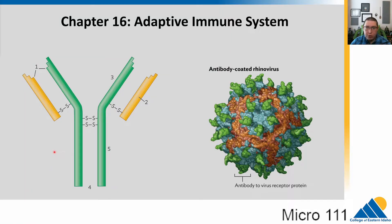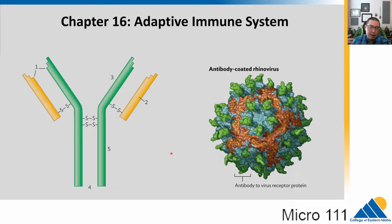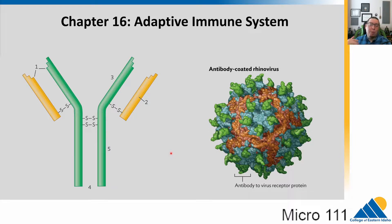We are into chapter 16, which is the second half of the immune system. This half is called the adaptive immune system, which is somewhat unique to mammals and some other organisms. Insects don't have this adaptive system — we only know that they have an innate system. This system is critical because it allows our immune system to recognize specific pathogens and build memory to them, which helps keep us healthy and deal with infections much faster.